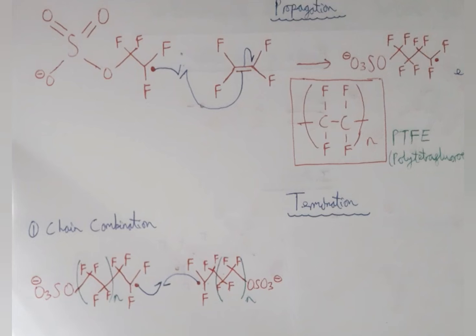In termination, to stop the polymerization, there are two main methods. In this example, we will consider chain combination because disproportionation isn't possible because it requires a hydrogen atom to be on the carbon adjacent to where the radical is, which we don't have. We don't have a carbon to hydrogen bond in this example.